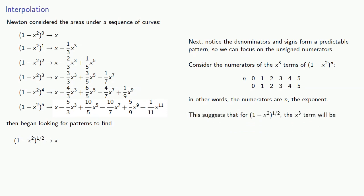And this suggests that for (1 - x²)^(1/2), the x³ term will be -1/2 over 3 x³, which equals -1/6 x³.